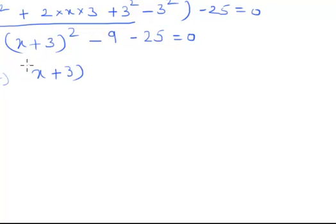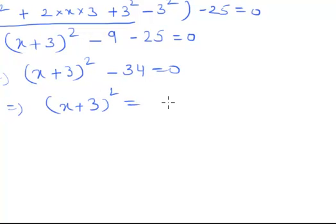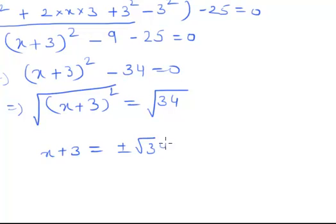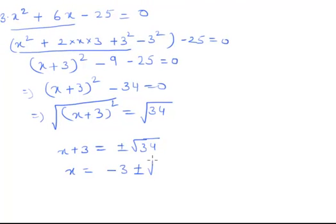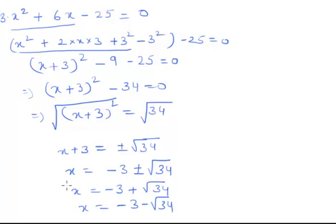So (x + 3)² - 34 = 0, which gives (x + 3)² = 34. Taking the square root of both sides, x + 3 = ±√34. As long as this value is positive, you can calculate real roots; if negative, the roots are imaginary. So x = -3 ± √34. One value is x = -3 + √34 and the other is x = -3 - √34. These are the two zeros corresponding to the given quadratic equation.